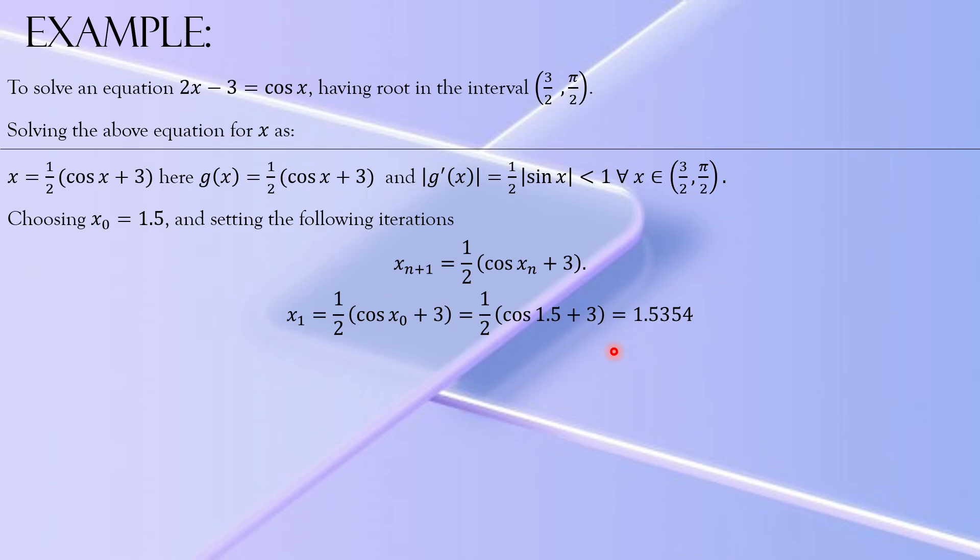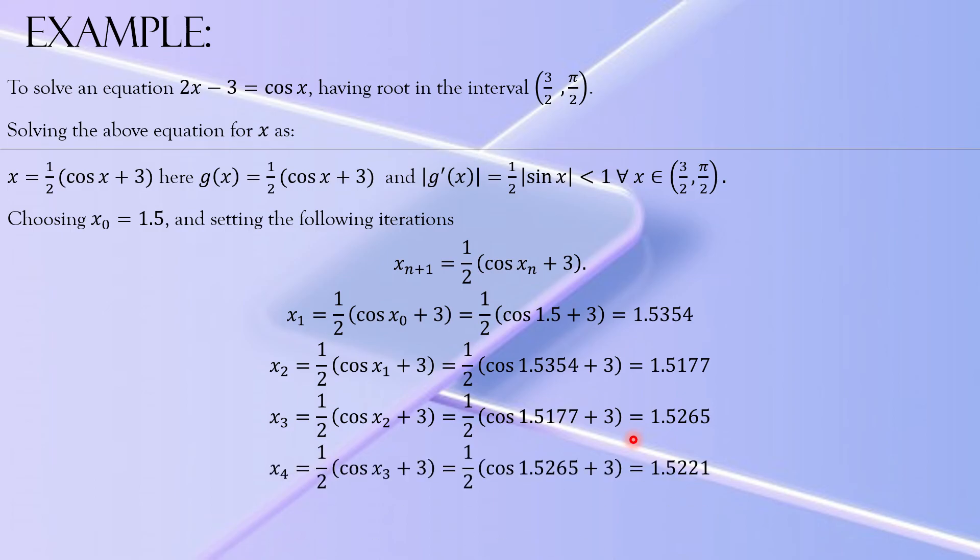Now using this value 1.5354, x₂ would be 1/2(cos(x₁) + 3) where x₁ is 1.5354, so you would use this value here plus 3 and that is 1.5177.